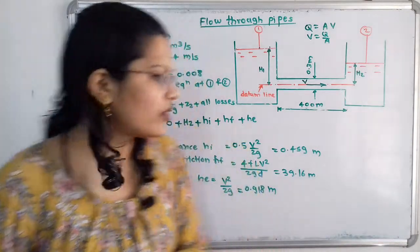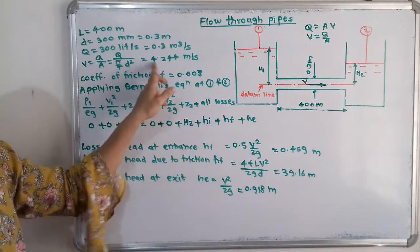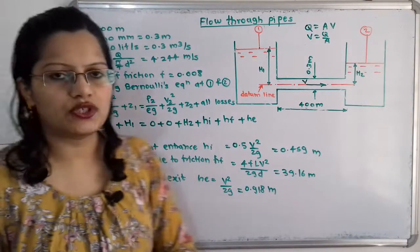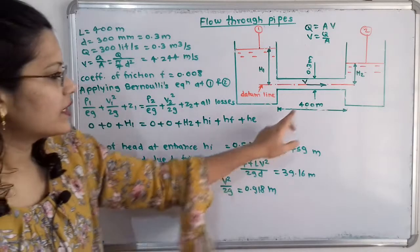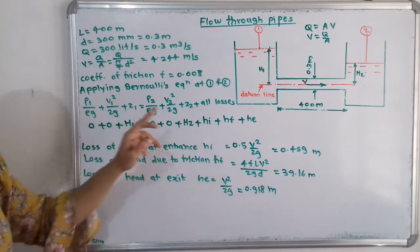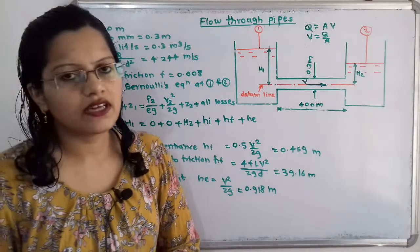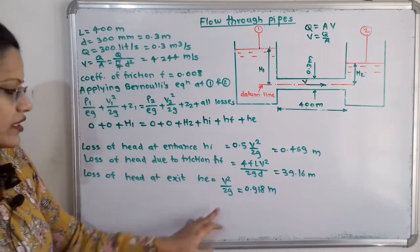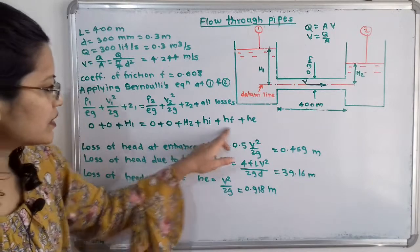Now we calculate the individual losses. Loss of head at the entrance: HI = 0.5 × V²/2g = 0.459 m. Loss of head due to friction: Hf = 4FLV²/(2gD) = 4 × 0.008 × 400 × (4.244)² / (2 × 9.81 × 0.3) = 39.16 m. Loss of head at the exit: He = V²/2g = (4.244)² / (2 × 9.81) = 0.918 m.